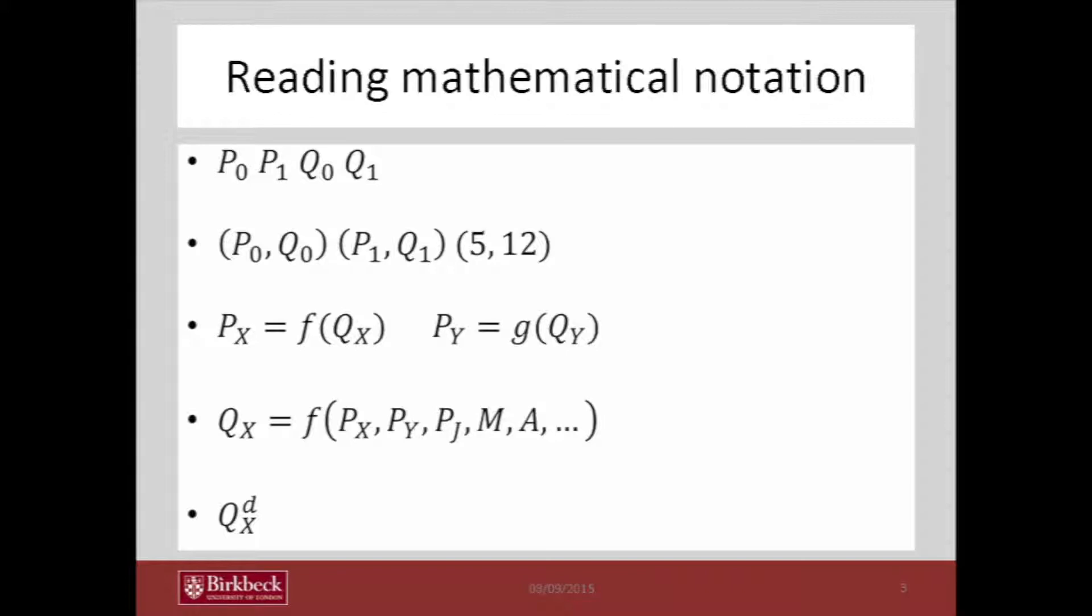In the third row, if you look at it, it says Px equals f(Qx) and Py equals g(Qy). What do we mean by this? Well, this is the mathematical way of showing that the price of good X is a function of quantity of the same good.